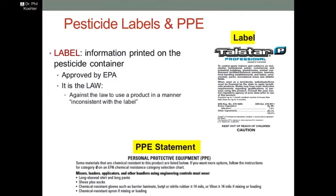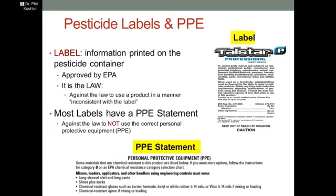One of the things I found is that most pesticide labels have a PPE statement. There are a lot of baits that do not have a PPE statement — they don't require you to use personal protective equipment. However, most of the labels used by the pest management industry have some sort of a PPE statement. My interpretation is that it is really against the law not to use the correct personal protective equipment that's on the label. Often people take the idea that this is something advisory, something you should do to protect yourself — that it's not a big deal if you don't do it. However, it is something that could be regulated.